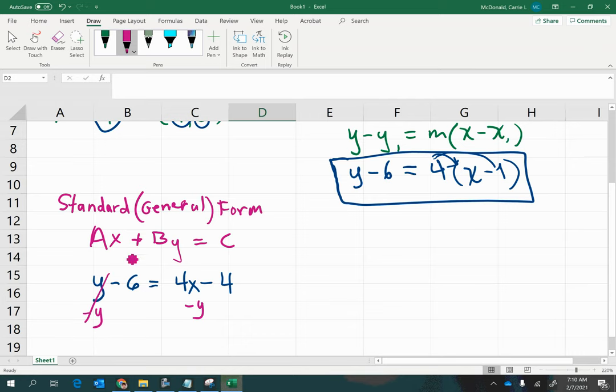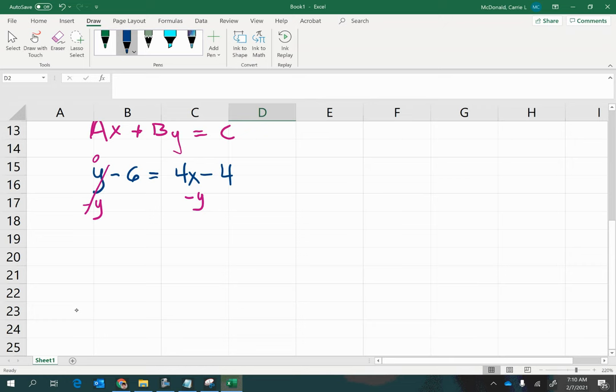So now we'll zero that out. So now we have negative 6 equals 4x minus y minus 4. And we wanted all the constants to be together on one side. So let's now add this 4 over here, zero's out.